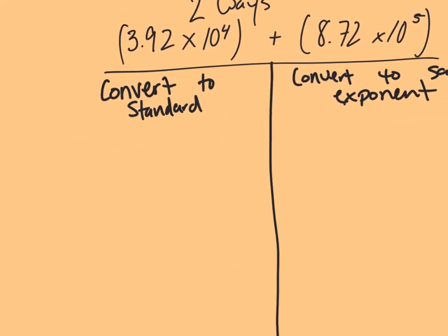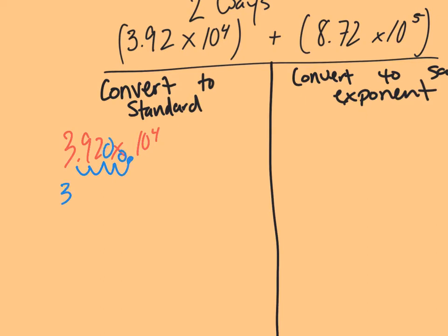I'm going to start with 3.92 times 10 to the fourth. I'm going to convert it to standard notation and move one spot, two spots, three spots, four spots, with two zeros in. So I'm going to rewrite that as 39,200.